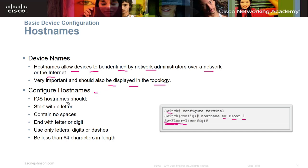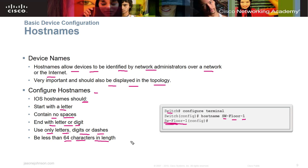To configure hostnames, the IOS hostname should start with a letter, contain no spaces, end with a letter or digit, use only letters, digits, and dashes — no special characters like asterisks or ampersands — and be less than 64 characters in length.